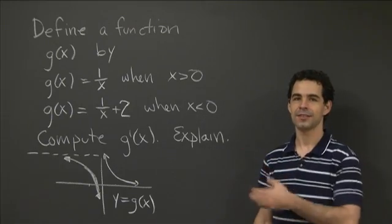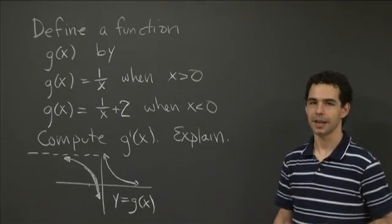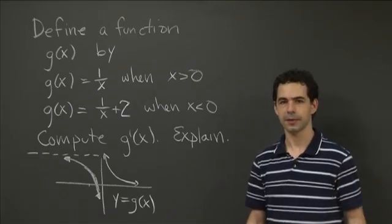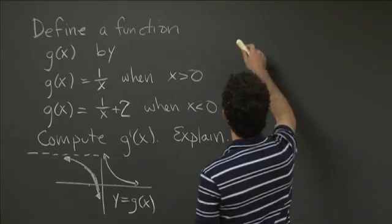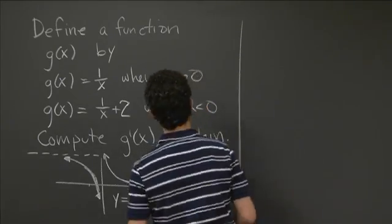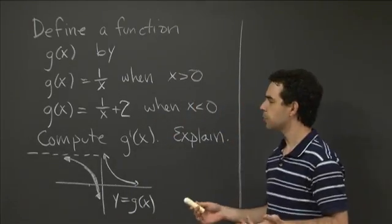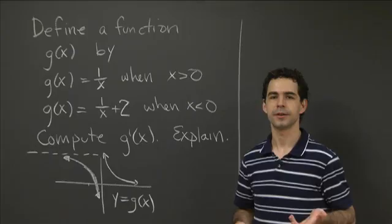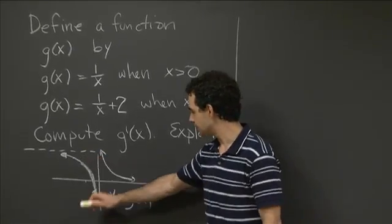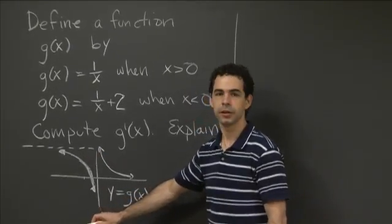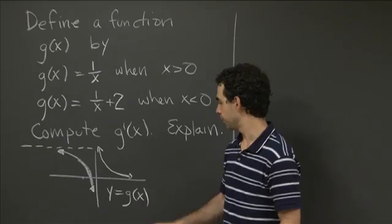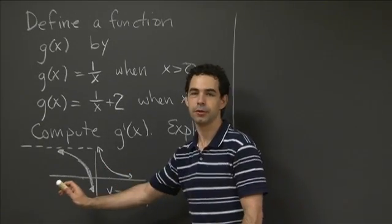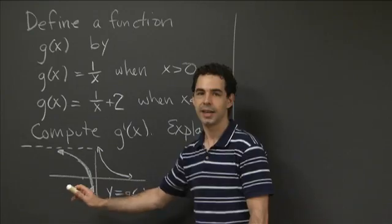Welcome back. Hopefully you had some fun working on this problem. Let's do the first part, which is just the computational part. Because this function is defined piecewise, we can just compute the derivative on the different pieces. The function isn't defined at 0, so of course it doesn't have a derivative at 0. But we can compute a derivative when x is positive and when x is negative.